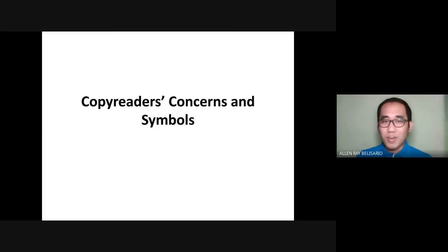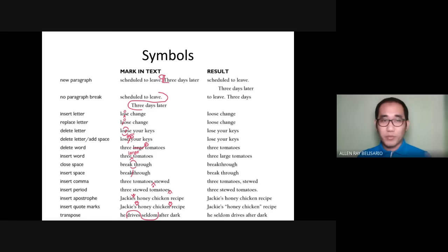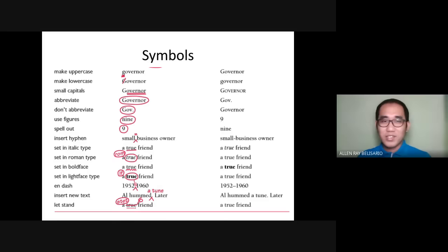Next are the copy reader's concerns and symbols — the common copy editing symbols you may use when editing. The first column lists the task or name and function of a particular symbol. The second column shows how to use the symbols; the red-colored symbols are the ones you use when editing. The third column shows the result of a phrase or word once edited. Other symbols include capitalization or uppercase, lowercase, capitals, abbreviate, and more.